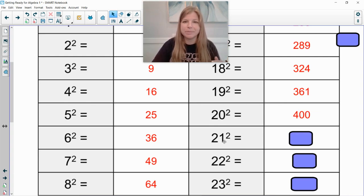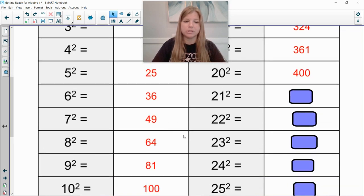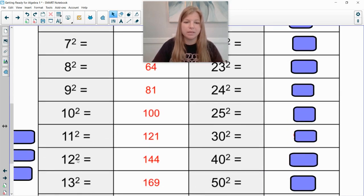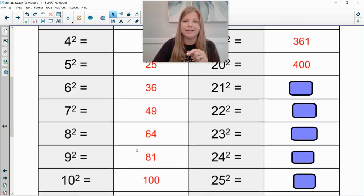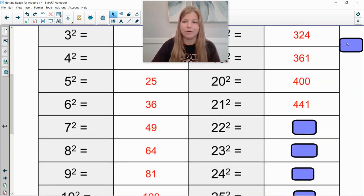21 squared I absolutely love. I think this is so cool. So let me show you. 12 squared was 144. Well 21 is just 12 reversed, right? So if 12 squared is 144, 21 squared is 441. So that's fun to remember.